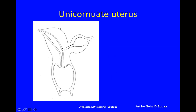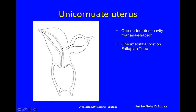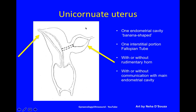This is a unicornuate uterus. It is one endometrial cavity that is vaguely banana-shaped, with one interstitial portion of the fallopian tube, with or without a rudimentary horn, and with or without a communication to the main endometrial cavity. Single cervix.